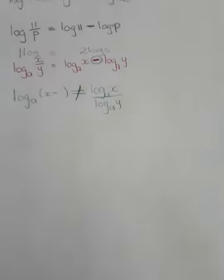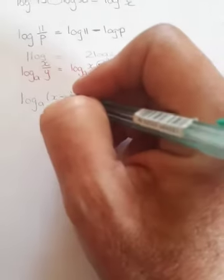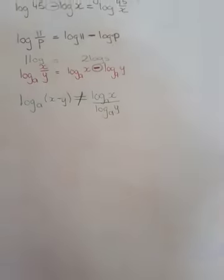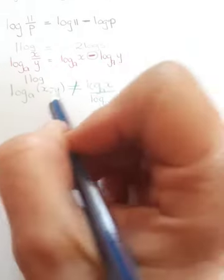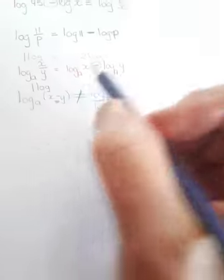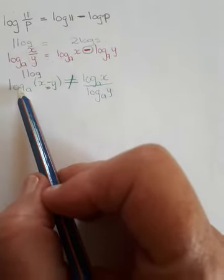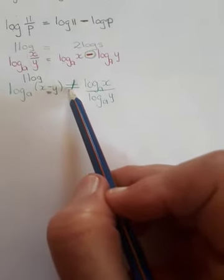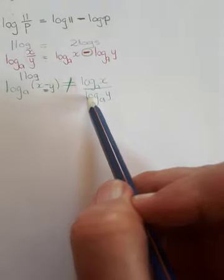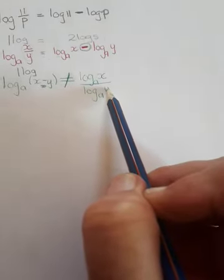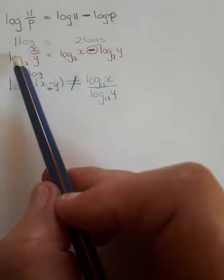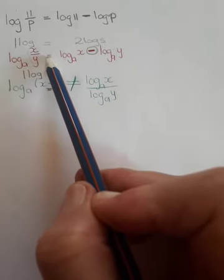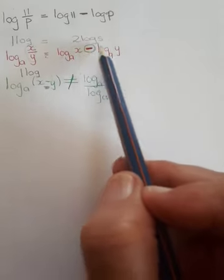I want you to take note that if you have the log of x minus y, this is a single log — it is one log — and there is no law for the difference of one log. Therefore, the log of x minus y is not equal to the log of x divided by the log of y. It is really important that you have the log of a quotient equals the difference of their logs, which is two logs.